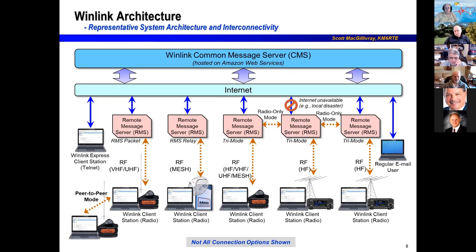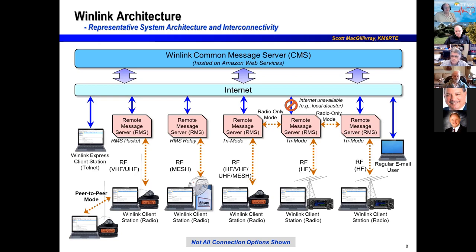Ted asks a quick question: he knows sailmail stations use something very similar to Winlink where radios scan different frequencies — you don't have to be tied to one particular frequency. He's wondering how the Winlink backend handles this across different modes. For example, in the presentation a separate radio was shown for each mode — is that correct, or can you combine modes and hop between them using one radio?